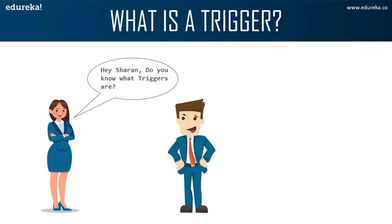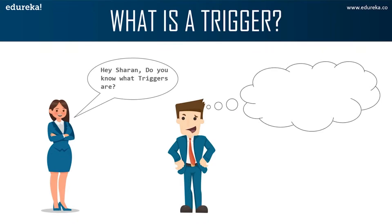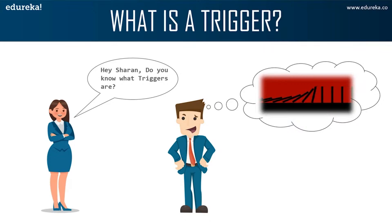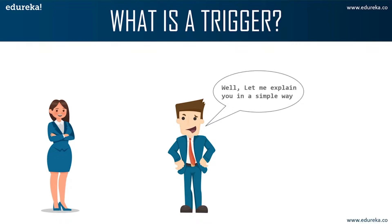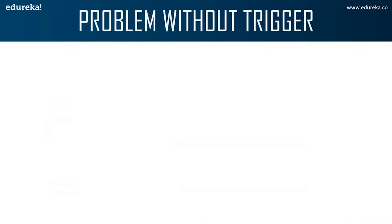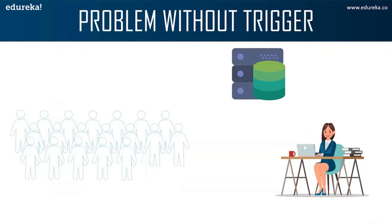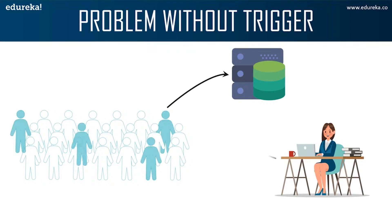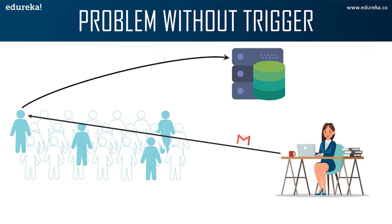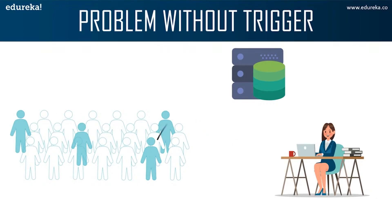Here we can see Anna is asking Sharon about triggers. Sharon imagines a trigger as falling dominoes. Anna is a marketing officer in a company. When new customer data is entered into the company's database, she has to send a welcome email to each and every new customer. If it is one or two customers, Anna can do it manually, but what if the count is more than a thousand?